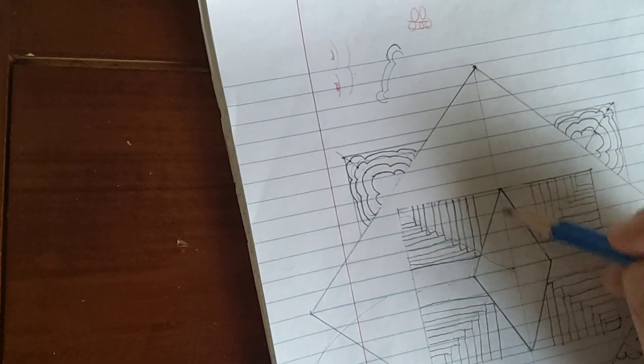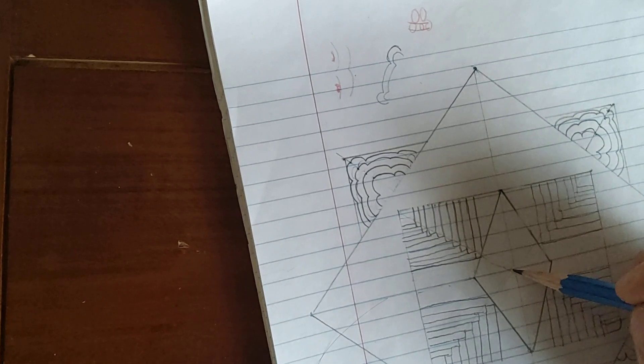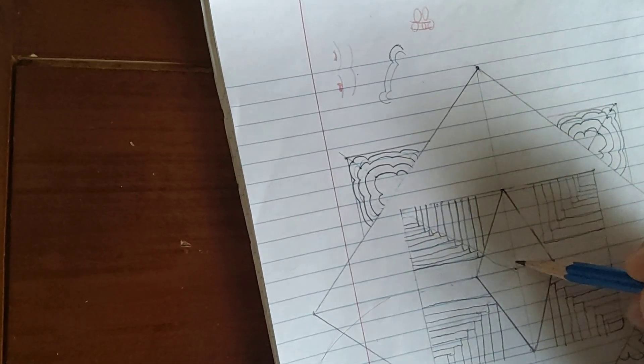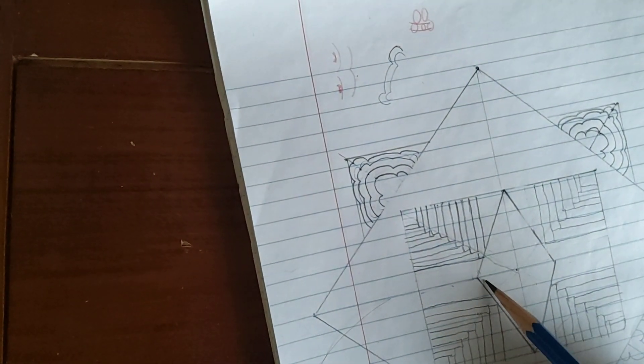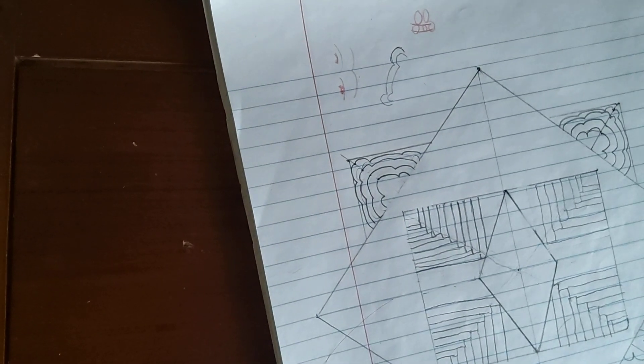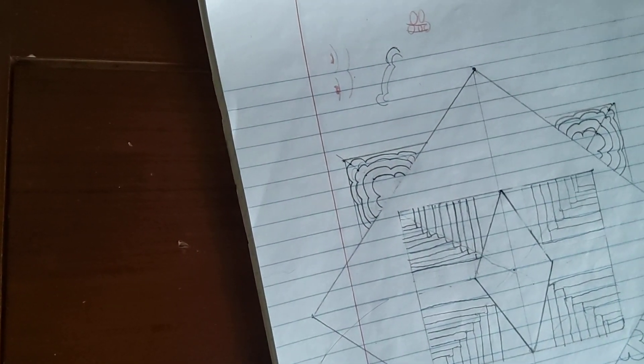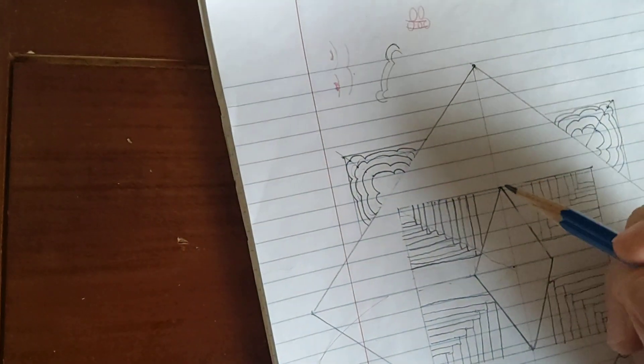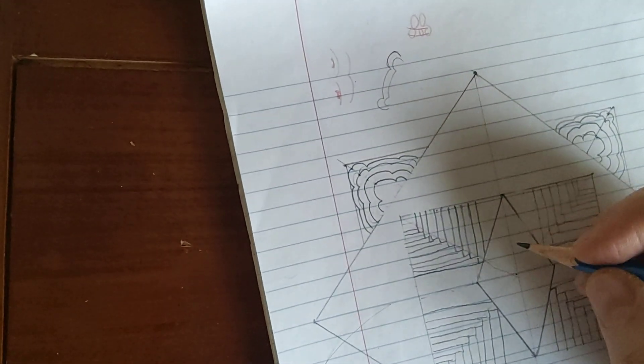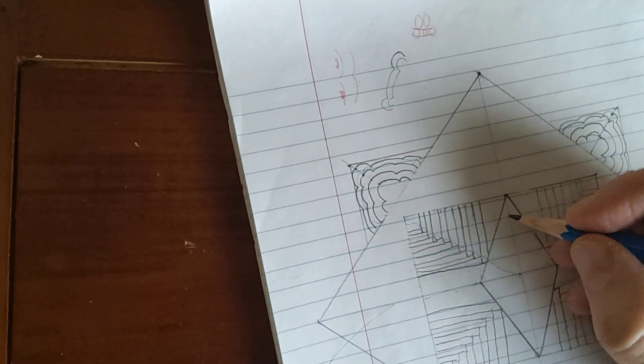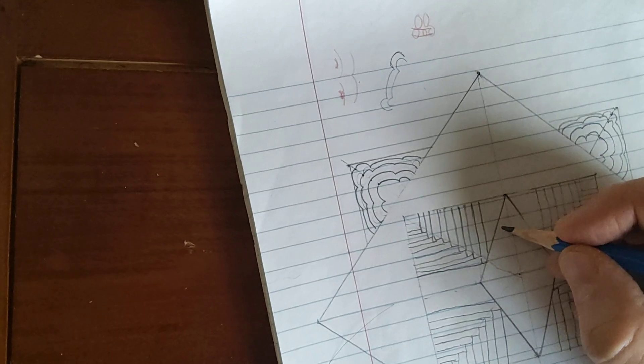If you were to make this like a three-dimensional shape, there would be these kind of lines. We'd have to do some shading. It was very straight, right? But I kind of want to play with this idea they were talking about with circles.